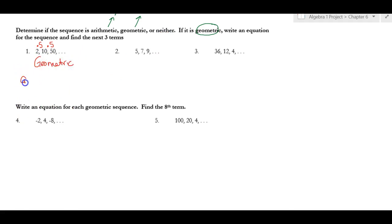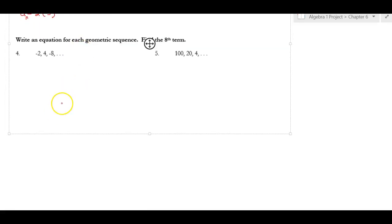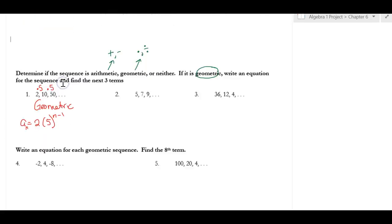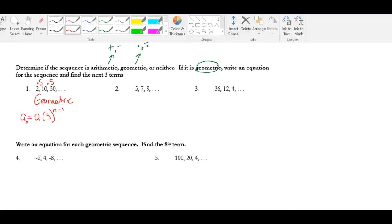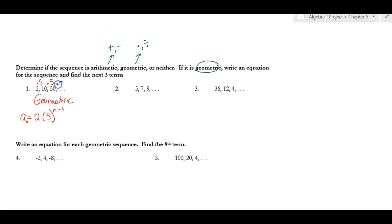We write the equation: a sub n equals 2 times 5 to the (n minus 1). The next three terms: multiplying 50 by 5 gives 250, then 250 times 5 gives 1250, then 1250 times 5 gives 6250.